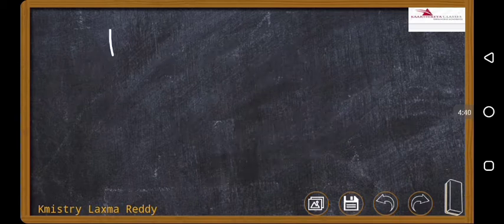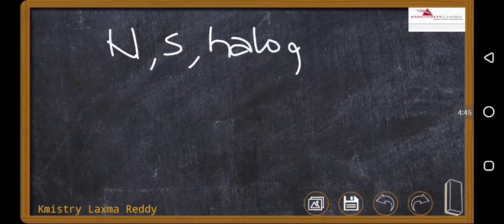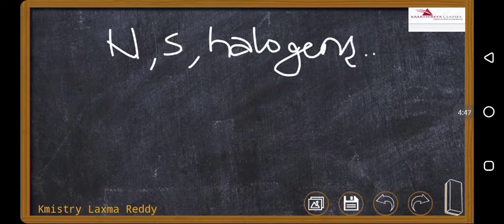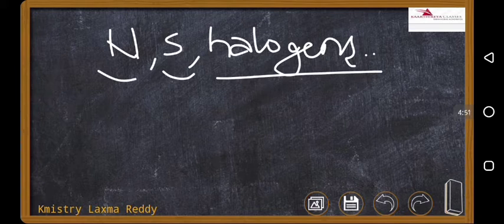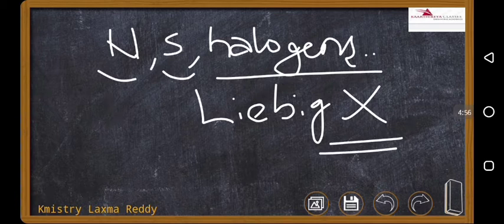If nitrogen, sulfur, halogens are present, we know about these elements, whether they are present or not. So, these are present. Leibig method is not good. But we don't have any other method. We have Leibig method only. So, we need to make some changes. What changes are there?